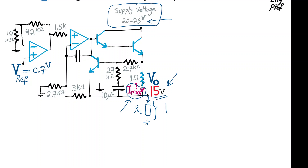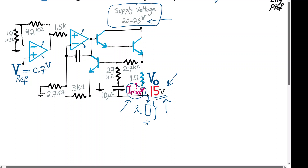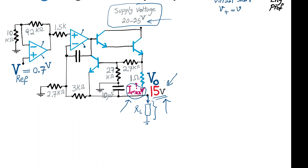Let's first prove that the output is 15 volts. First, make the assumption that the op-amps are properly biased so that they are in the linear region of operation and not saturated, so the virtual short is valid for each op-amp — meaning the voltage at the positive input terminal is the same as the voltage at the negative input terminal. So Vref of 0.7 volts is applied at the positive input terminal of op-amp number 1, and therefore because of the virtual short, Vref of 0.7 volts appears at the negative terminal as well.